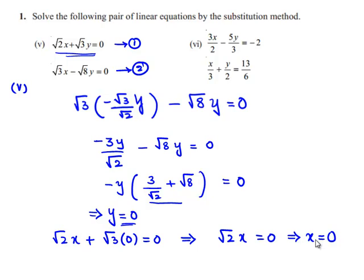So we got x is equal to 0 and y is equal to 0. Therefore, the solution for the given pair of linear equations are x is equal to 0 and y is equal to 0.